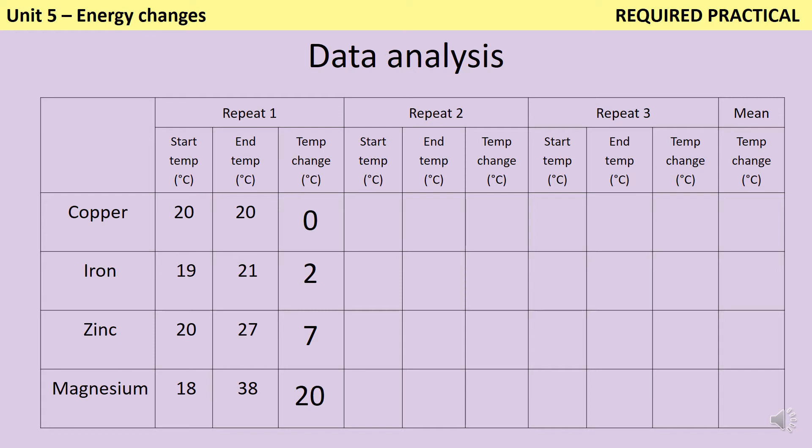One thing you'll notice in my results table is that I haven't written degrees C after any of the numbers, and this is important when you're writing a results table. The units always go in the headers at the top, they shouldn't be found within the body of the table, and if you do put them there, then you may lose marks.